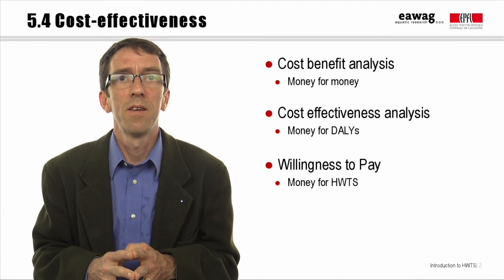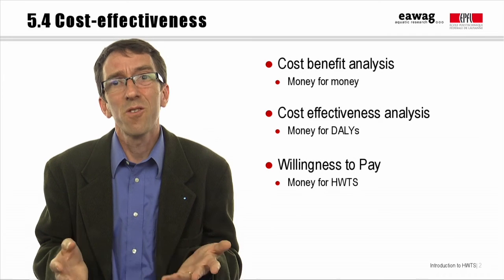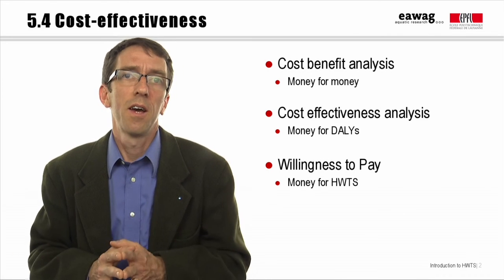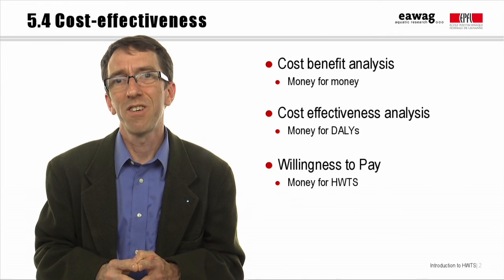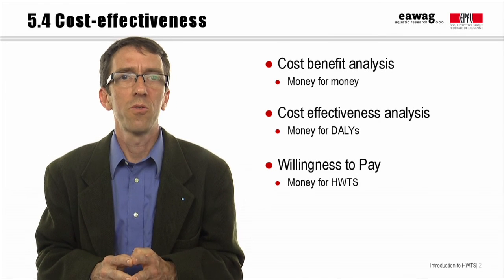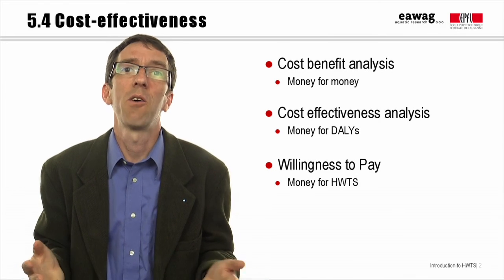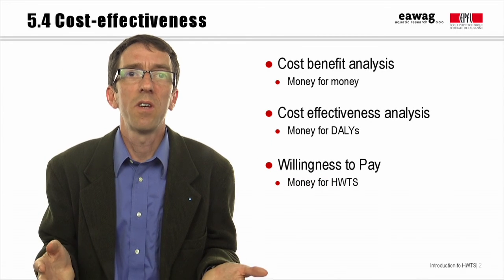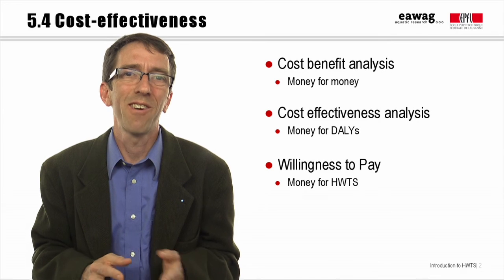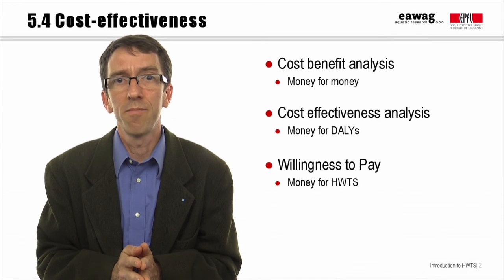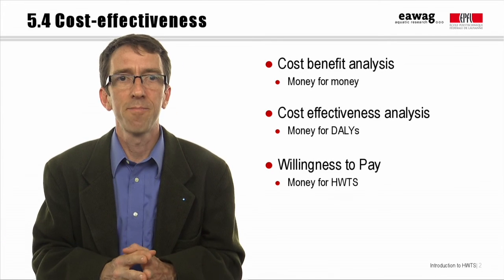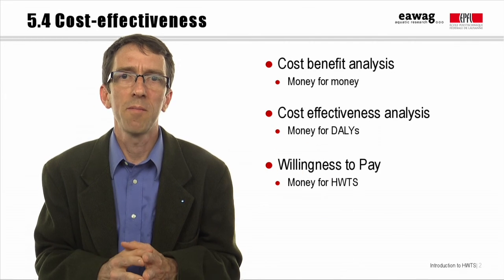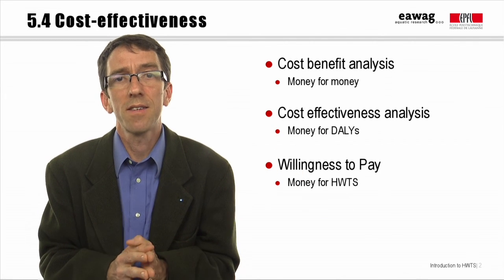A problem with cost-benefit analysis is that the benefits can be difficult to quantify. A simpler analysis is to only look at the costs and consider which among several different approaches is the cheapest way to achieve a certain desired outcome. This is called cost-effectiveness analysis. In HWTS, a common measure of the desired outcome is the amount of diarrheal disease prevented, measured in deaths or DALYs. Either type of analysis can help policymakers decide how to allocate scarce resources.